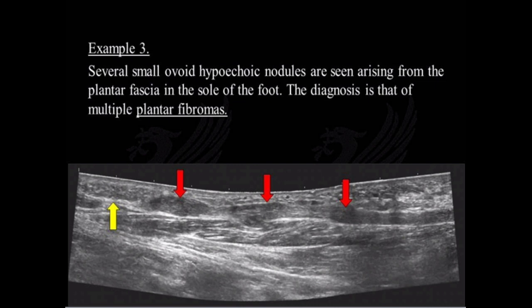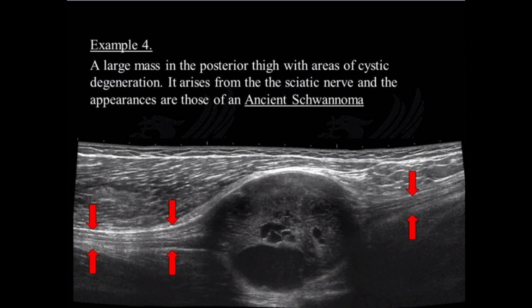Example 3: Several small ovoid hypoechoic nodules are seen arising from the plantar fascia in the sole of the foot. The diagnosis is that of multiple plantar fibroma. Example 4: A large mass in the posterior thigh with areas of cystic degeneration arises from the sciatic nerve, and the appearances are those of an ancient schwannoma.